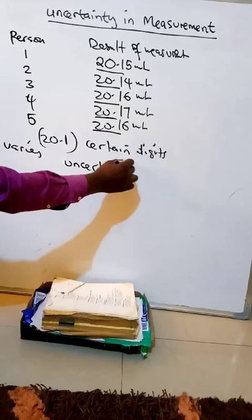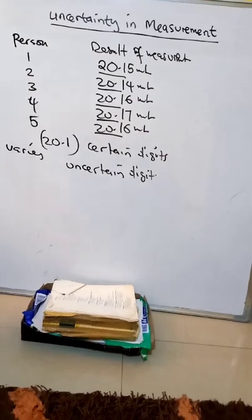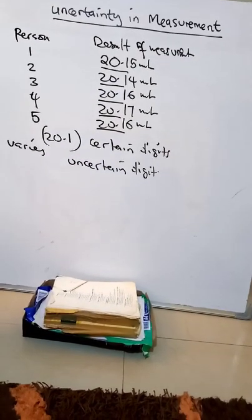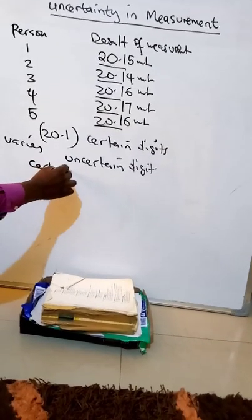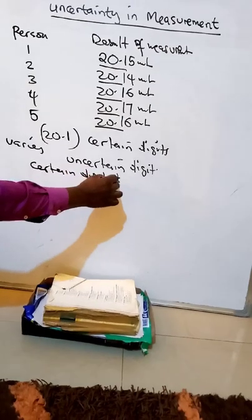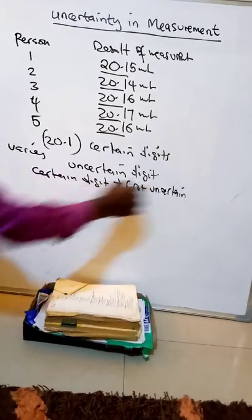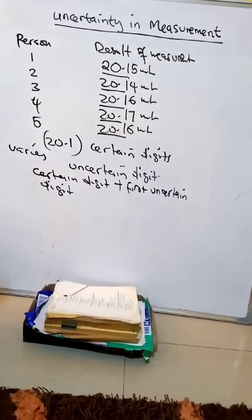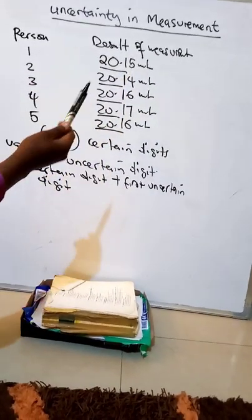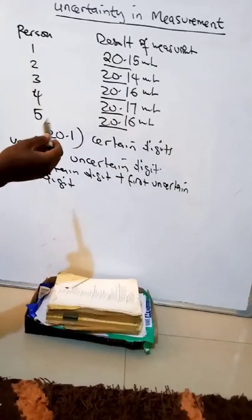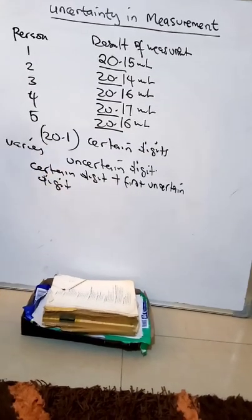The digit that is estimated is called the uncertainty digit. When reporting, we usually record all the certain digits plus the first uncertainty digit. It is very important to realize that a measurement always has some degree of uncertainty.